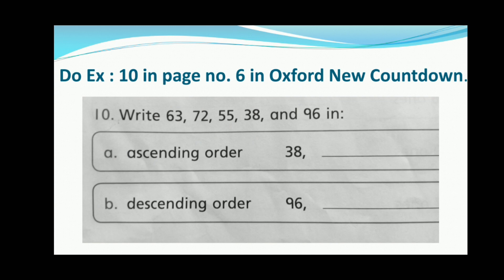Do Exercise 10 on page number 6. You already learned about ascending and descending order in the previous lesson. Ascending order means when numbers are arranged from smallest to biggest, and descending order means when numbers are arranged from biggest to smallest. Now complete this exercise.